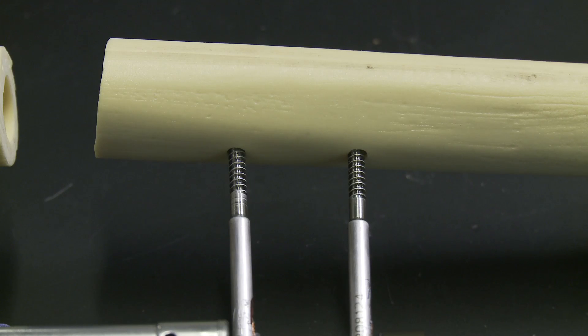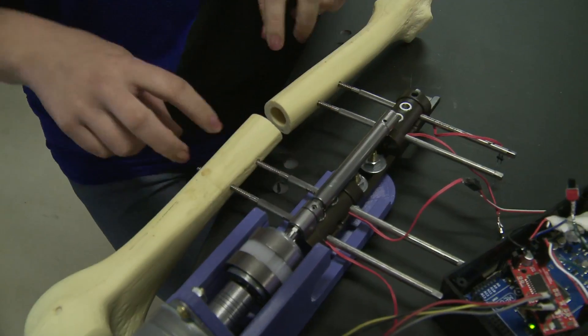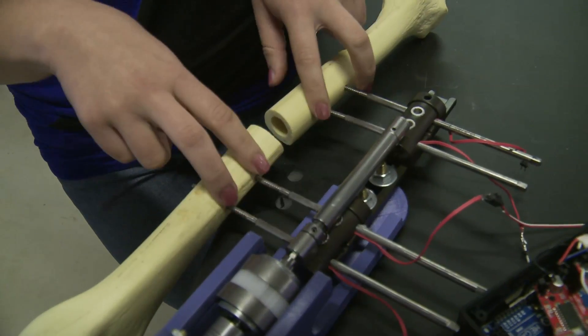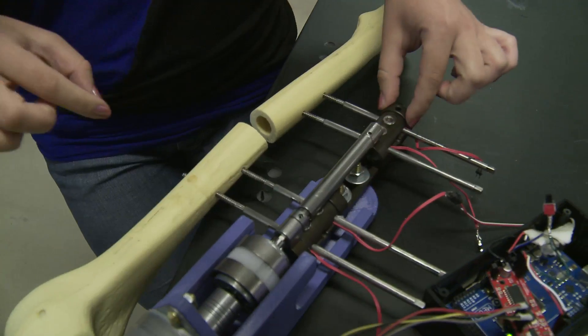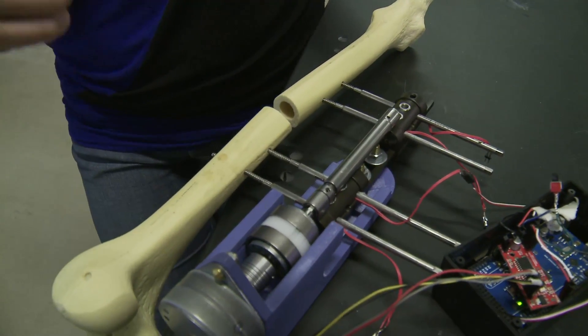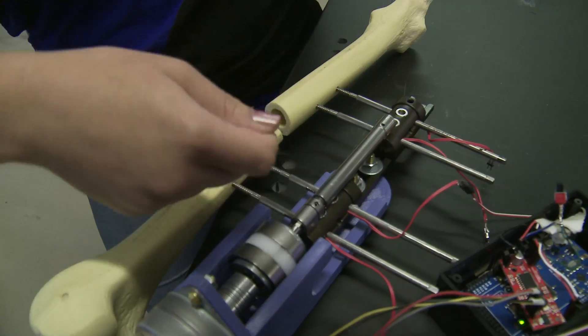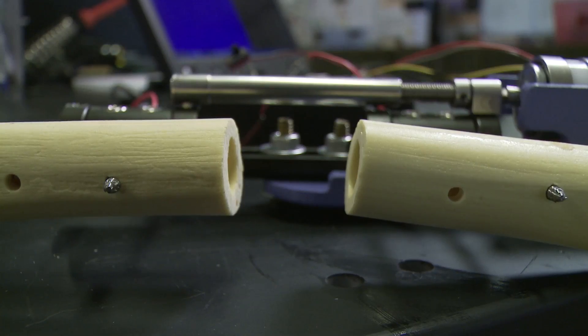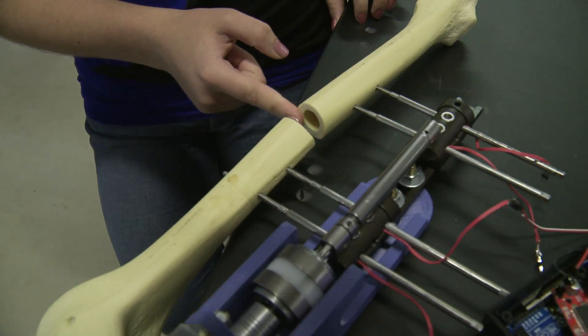So what they do now is they'll start with this bone, they'll drill these pins into the bone like you see here. They drill them in and then they'll put this frame and attach this part. That's what they have now and they'll use a wrench to turn this and that'll slowly separate these two pieces of the bone and the bone grows in between in this gap.